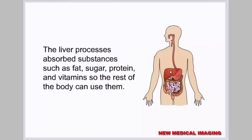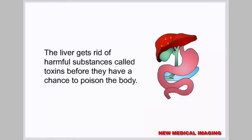The liver processes absorbed substances such as fat, sugar, protein, and vitamins so the rest of the body can use them. The liver also gets rid of harmful substances called toxins before they have a chance to poison the body.